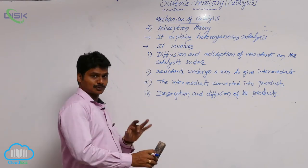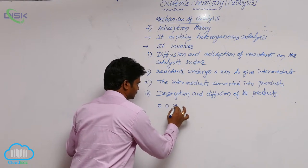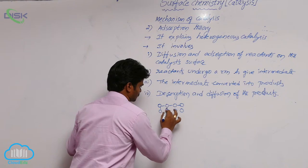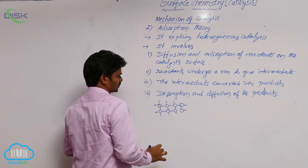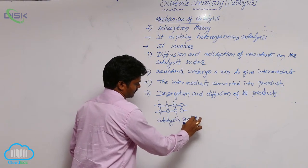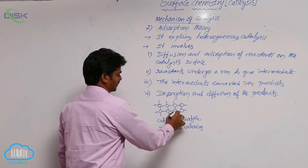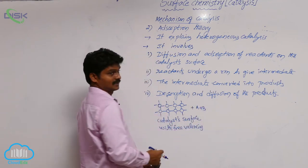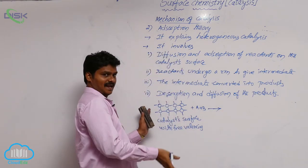Now let's see the schematic representation of this adsorption theory. This is a catalyst surface with free valences. Now to this catalyst surface, reactants A and B are coming. So what happens? They are simply adsorbed on the surface of the catalyst.